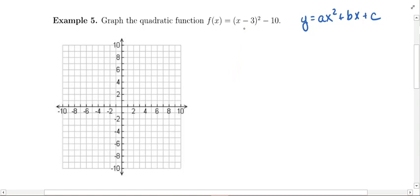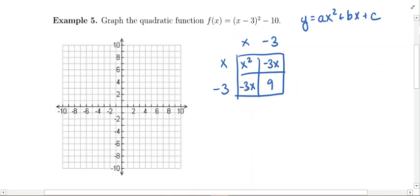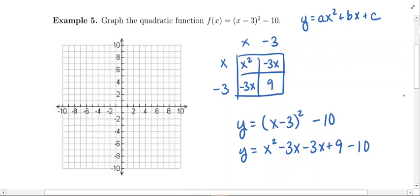I need to FOIL out or box the x minus 3 squared. So x minus 3 times x minus 3 since you're squaring it. We're going to get x times x is x squared, x times negative 3 is negative 3x, negative 3 times x is negative 3x, negative 3 times negative 3 is positive 9. So we're going to get y equals x squared minus 3x minus 3x plus 9. But don't forget to tack on the minus 10.